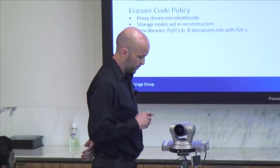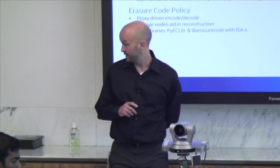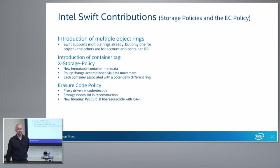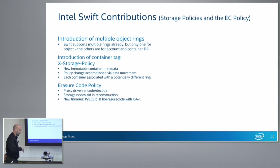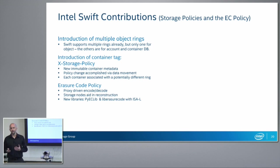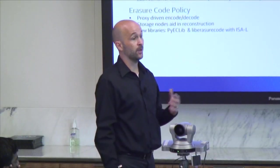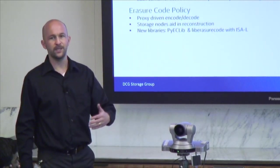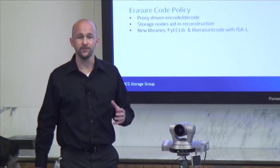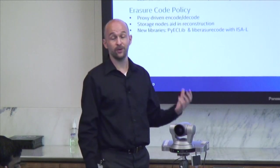Intel, over the last couple of years, focused on doing two primary things in the Swift open source community. One was the creation of what's called storage policies, which gives us the ability to apply qualities of service for the clusters. In addition to that, we created, with the community, an erasure code policy. So instead of triple replication, which is the default mechanism, we allowed Swift users to supply different policies. There was a lot of work that went into creating that erasure code policy.